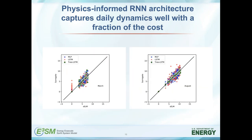This is a demonstration of the same type of result in a different way — showing GPP from the model itself and the surrogate for two different months across about 30 years of study. This highlights a bit better that the physics-informed architecture — the green dots, the physics-informed LSTM — actually works much better than the other two options.